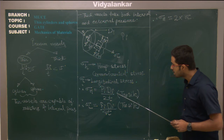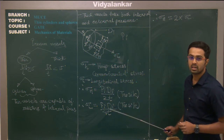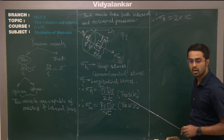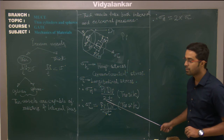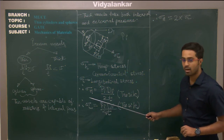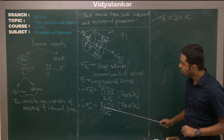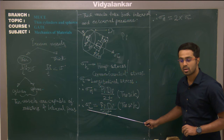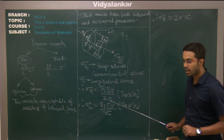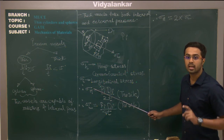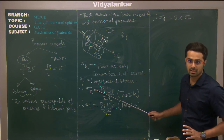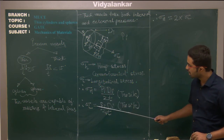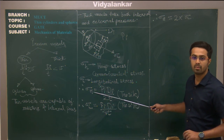Sigma h is tensile in nature — it will always be tensile because it is resisting high internal pressures. Hoop stress is tensile stress given by pi × di / (2t). Longitudinal stress is given as sigma l = pi × di / (4t), and again it is tensile in nature. Both these stresses cannot be compressive. Also note that sigma h is two times sigma l, or equivalently, sigma l is half of sigma h.